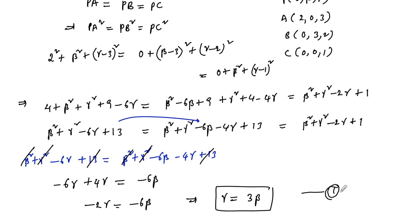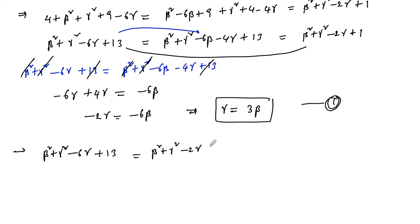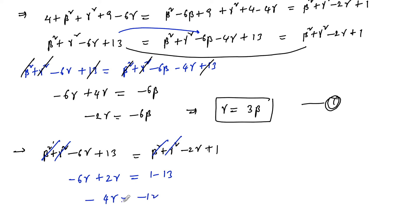Now considering the first and last expressions: β² + γ² − 6γ + 13 = β² + γ² − 2γ + 1. After cancellation: −6γ + 2γ = 1 − 13, so −4γ = −12, giving γ = 3.